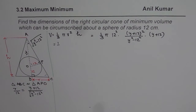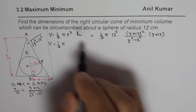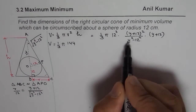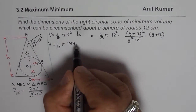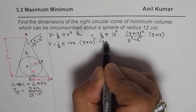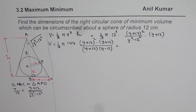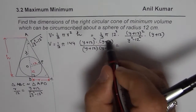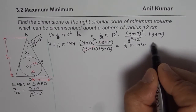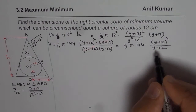This can be simplified. Volume equals one-third pi times 144 times (Y plus 12) squared over (Y squared minus 144). Since Y squared minus 144 factors as (Y plus 12)(Y minus 12), one factor of (Y plus 12) cancels. So the volume simplifies to V equals one-third pi times 144 times (Y plus 12) squared divided by (Y minus 12).